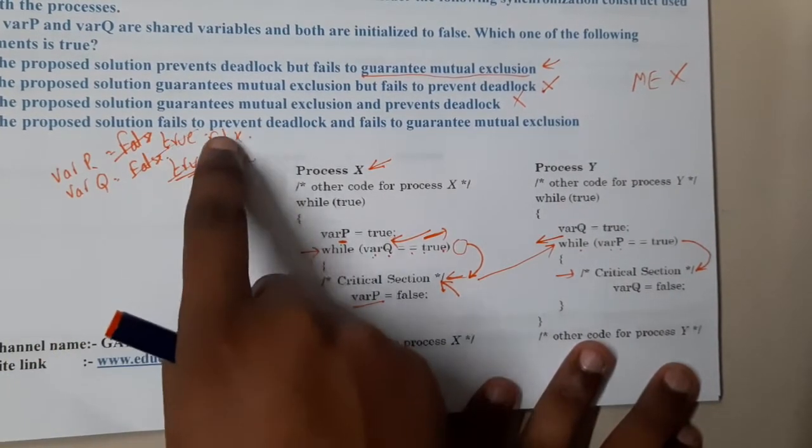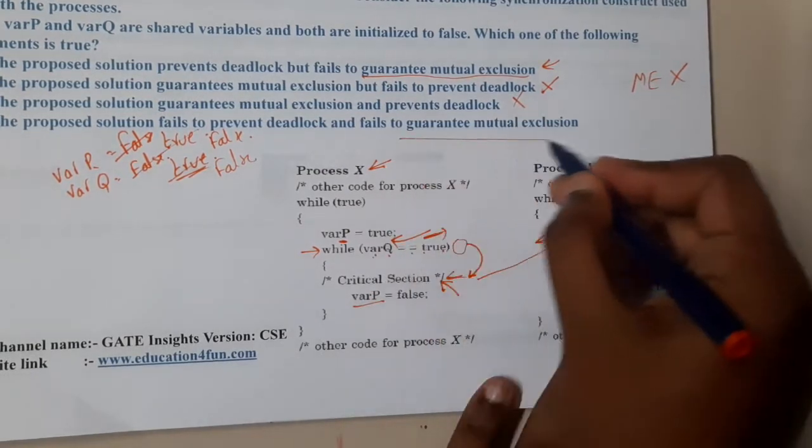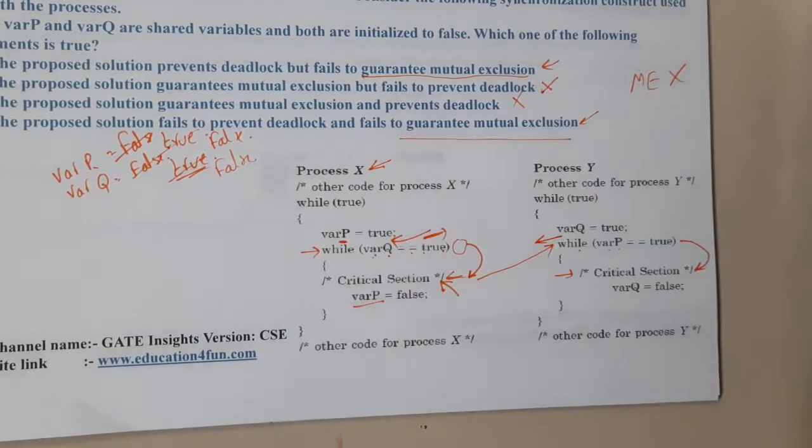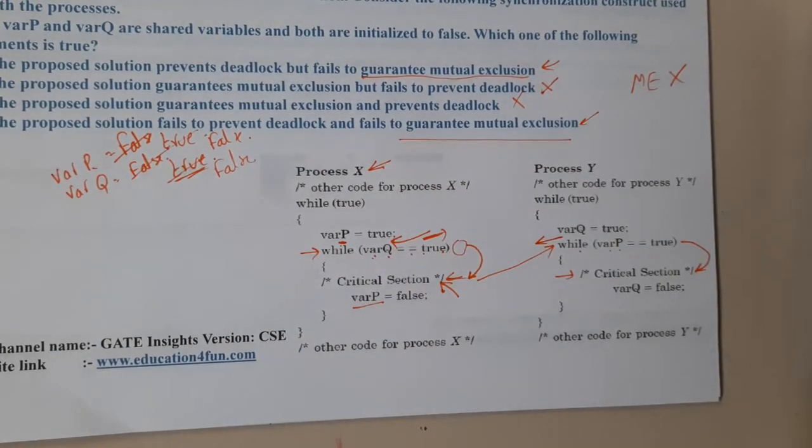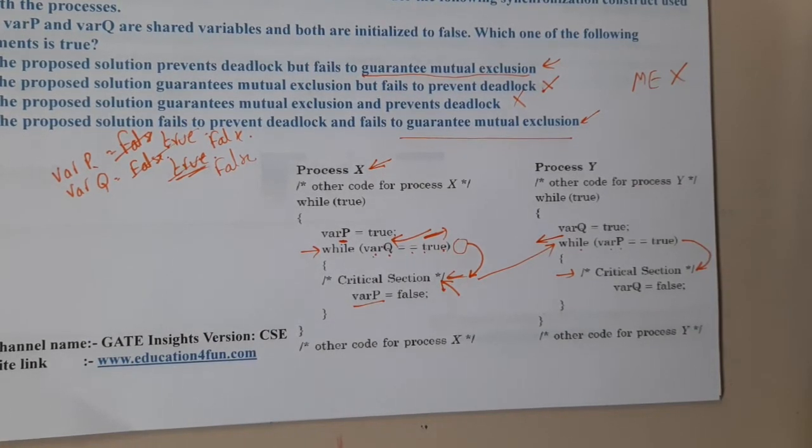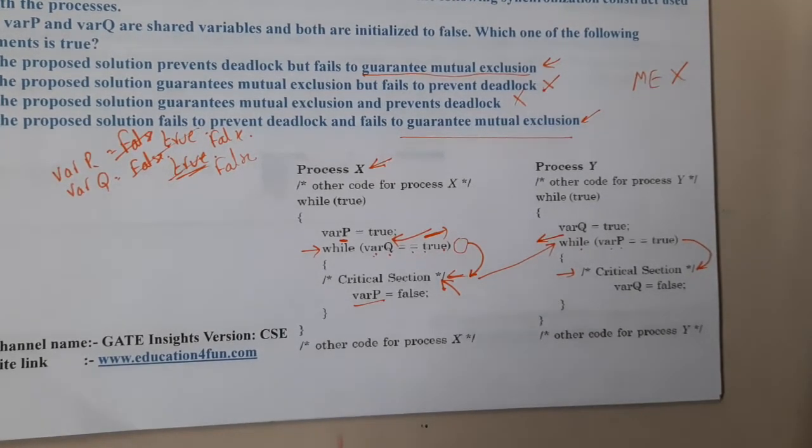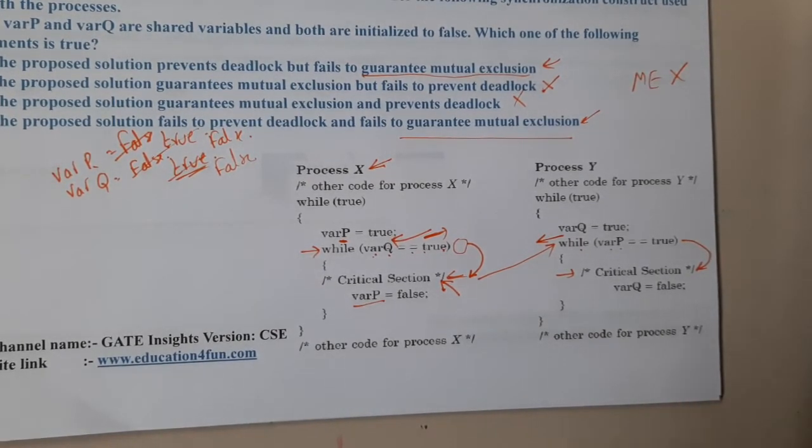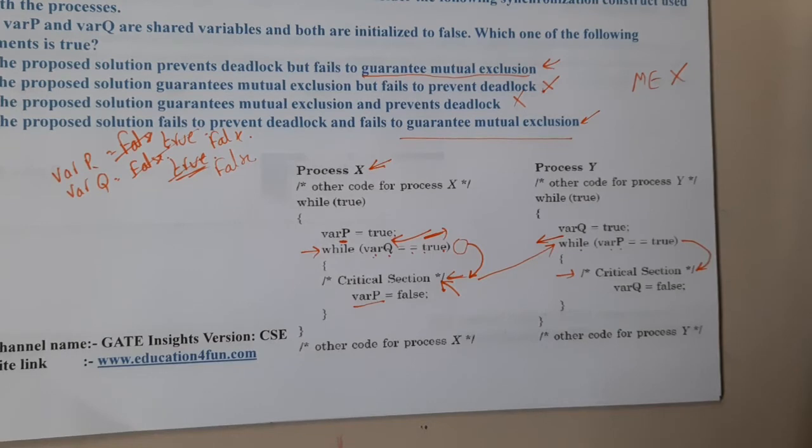Moving on to option D. Option D says that the proposed solution fails to prevent deadlock and fails to guarantee mutual exclusion. These two options are left out. Now the only question is in between this deadlock concept - whether it is available or not. What is the best thing to check it? Try to make deadlock.